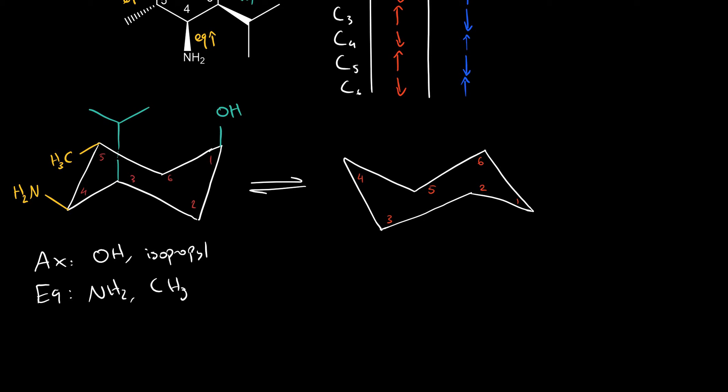So because of the ring flip, the OH group, which was axial up, is now equatorial up. So we draw that right here. And the isopropyl group, which was axial up at carbon 3, is now equatorial up at carbon 3. The amine group and the methyl group here will both be axial and trans. So we draw in our OH group here. Our isopropyl is equatorial up, and our formerly equatorial substituents are now axial trans.